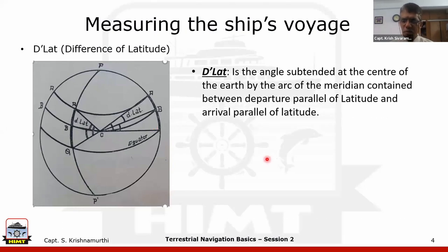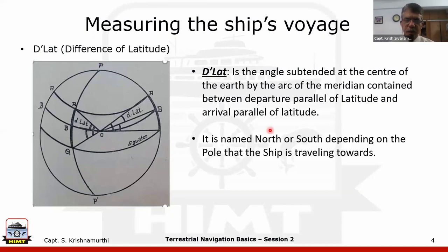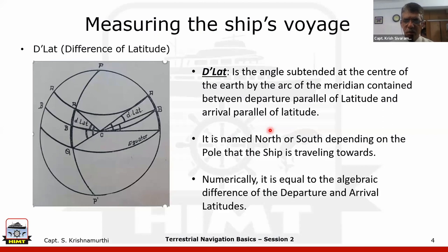The naming of D-lat is quite simple — it is the direction of travel. Numerically, it is equal to the algebraic difference of the two latitudes.